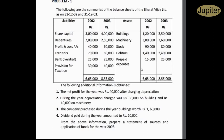Prepaid expenses are 100,000. The following additional information is obtained: The net profit for the year was Rs. 40,000 after charging depreciation. The net profit for the year is 40,000 and 60,000. This is 40,000 after charging depreciation. The net profit for the year is 250,000. Dividend paid during the year is also noted.